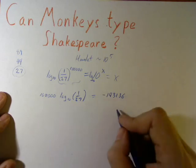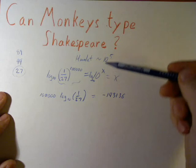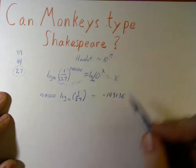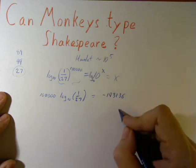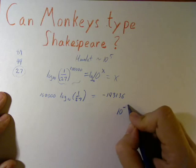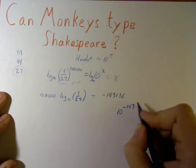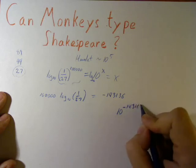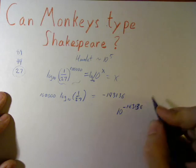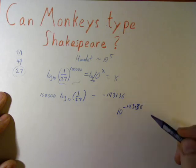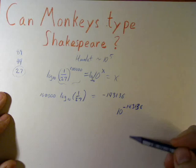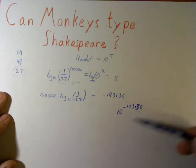the probability is, from just typing randomly out 100,000 characters, is 10 to the negative 143rd, 1, 6, 1, 3, 6. Okay, so, in other words, 1 over 10 to the positive this amount. It's not going to happen.